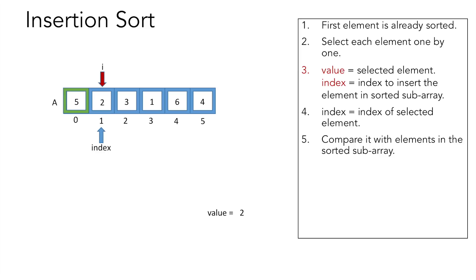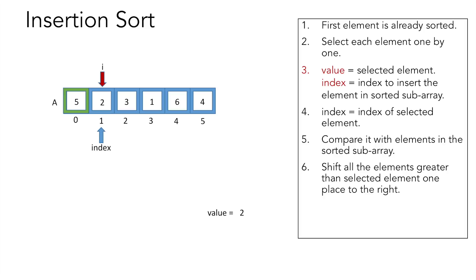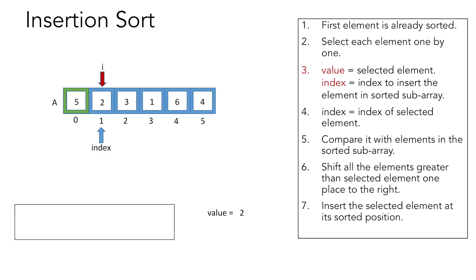We compare the selected element with elements in the sorted sub-array, shifting all elements greater than the selected element one place to the right, and finally insert the selected element at its sorted position. We run a while loop while index is greater than 0 and the element at index-1 is greater than the selected element. We shift by copying element at index-1 to index, then decrement index by 1. The condition index > 0 prevents going out of bounds.